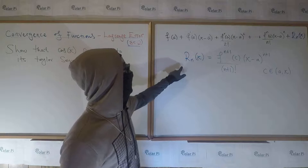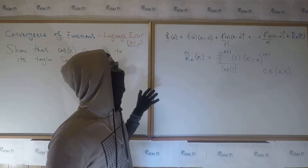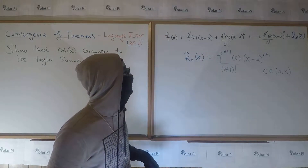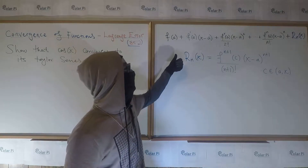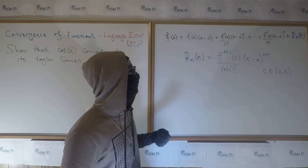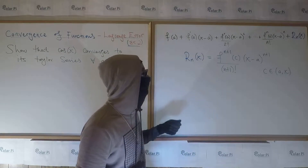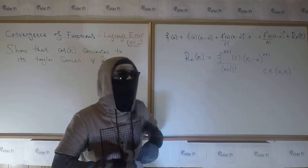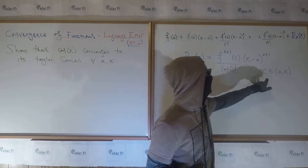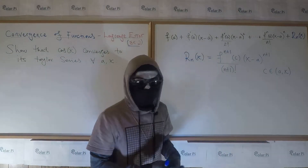We know that r sub n of x is this, right? And when we want to show that a particular function f converges to its Taylor series, what we need to do is take the absolute value of r sub n and then send n to infinity and show that it's equal to zero. As n goes to infinity, the absolute value of r sub n of x equals zero is what we have to show, where c is picked in the interval a to x.